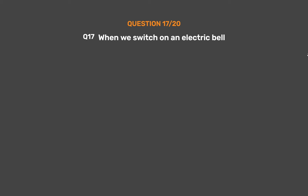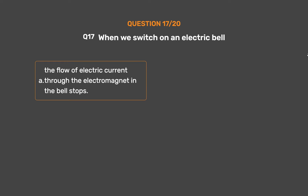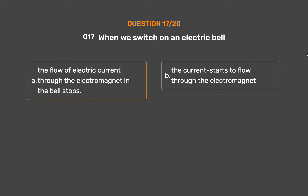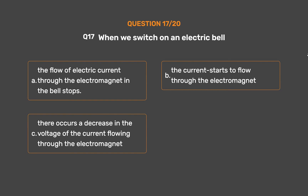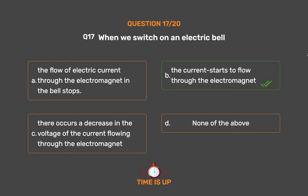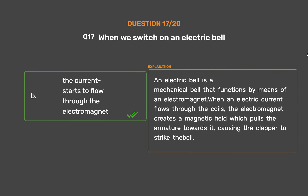Question number 17. When we switch on an electric bell: Option A: The flow of electric current through the electromagnet in the bell stops. Option B: The current starts to flow through the electromagnet. Option C: There occurs a decrease in the voltage of the current flowing through the electromagnet. Option D: None of the above. The correct answer is Option B: The current starts to flow through the electromagnet. An electric bell is a mechanical bell that functions by means of an electromagnet. When electric current flows through the coils, the electromagnet creates a magnetic field which pulls the armature towards it, causing the clapper to strike the bell.